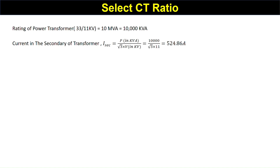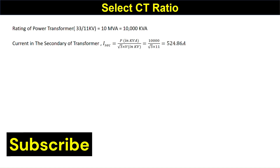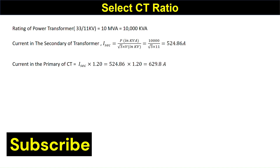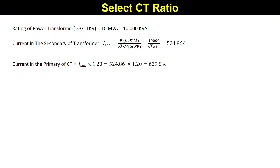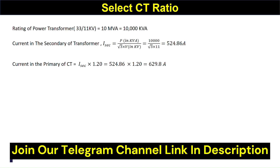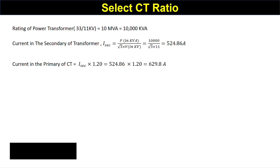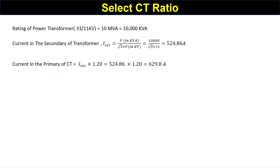The CT primary rating should account for a safety factor of 20%, so we calculate: 524.86 × 1.20 = 629.8 amperes. Our CT ratio should therefore be around 600/5 or 800/5. We need to decide which standard CT ratio to select from available options.